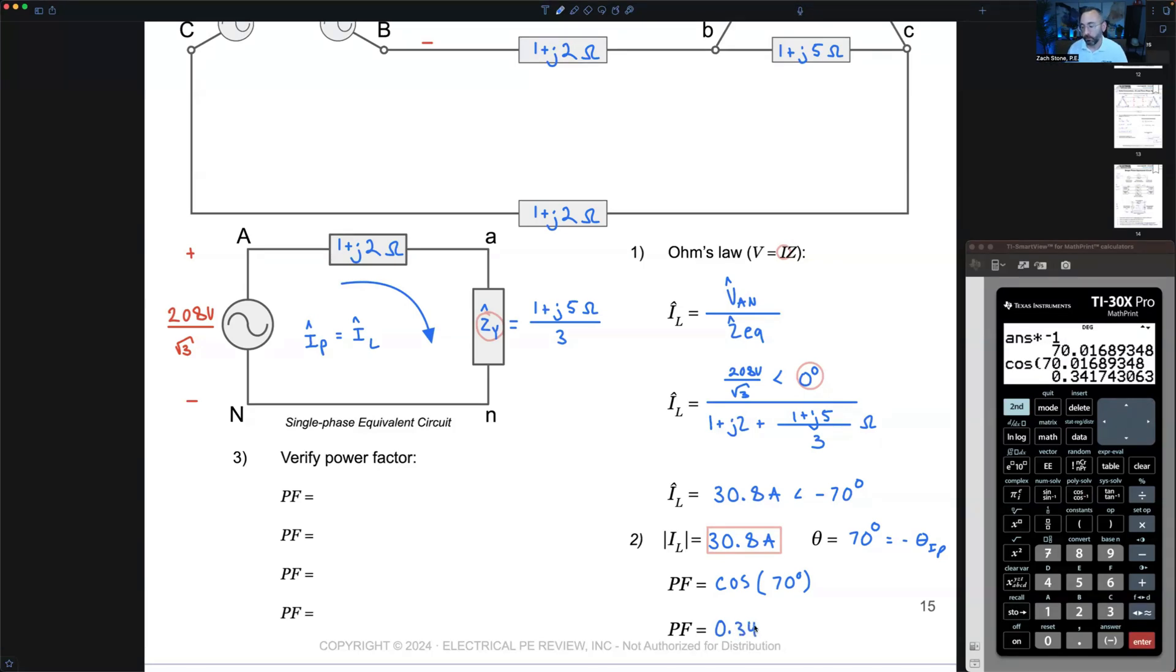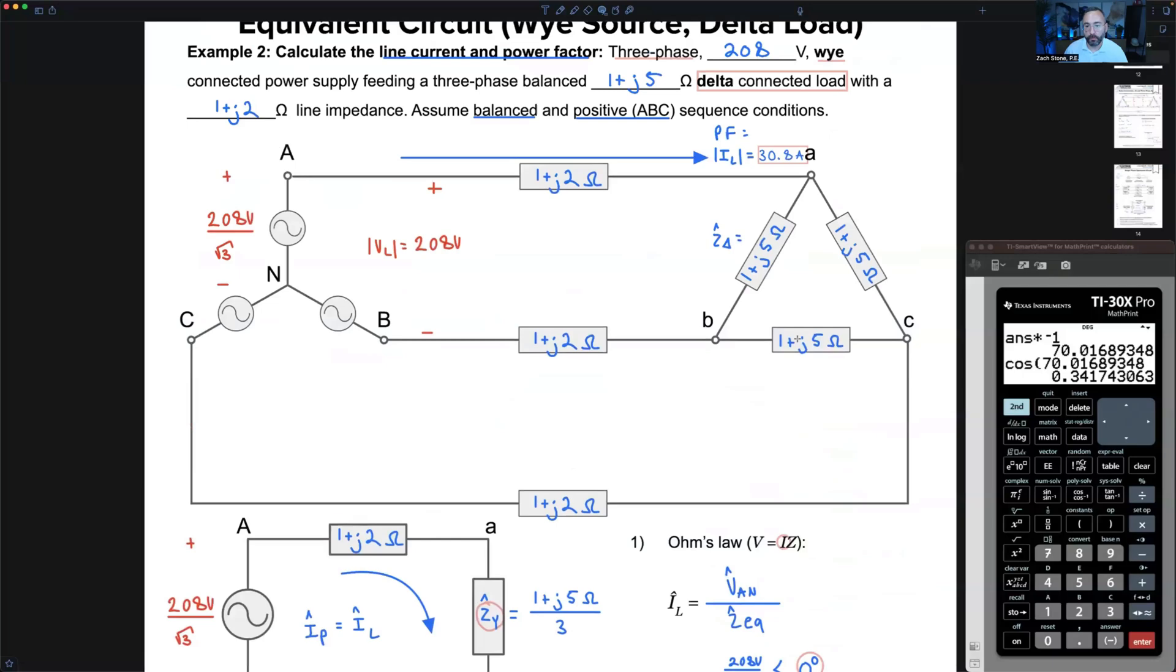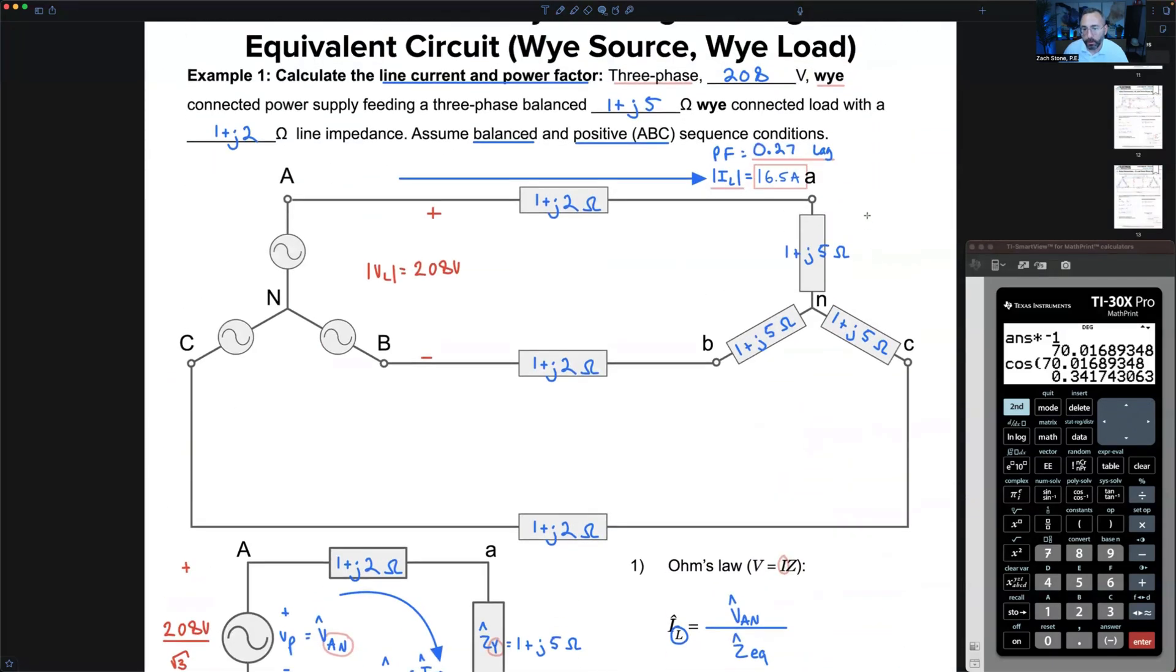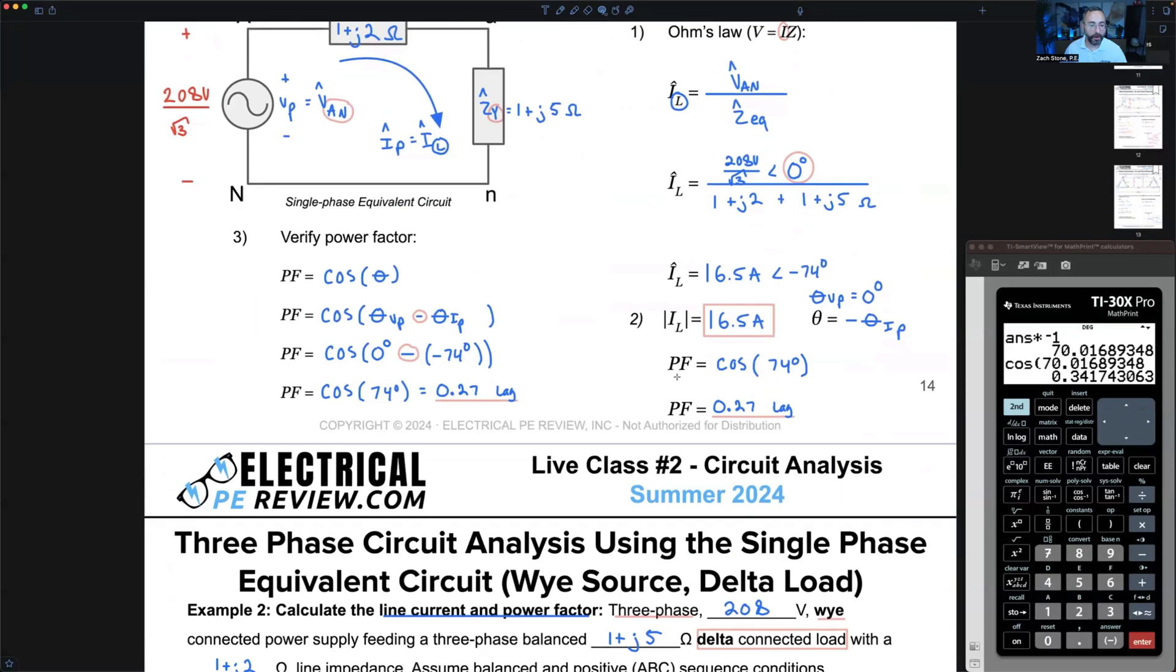Leading or lagging, how do we know? Lagging. Two things we can look at. Current lags voltage, because the current is negative when the voltage is zero degrees. So I already know current is behind, it's lagging. Second one is theta is positive. How does that compare to the previous one? They're different enough.